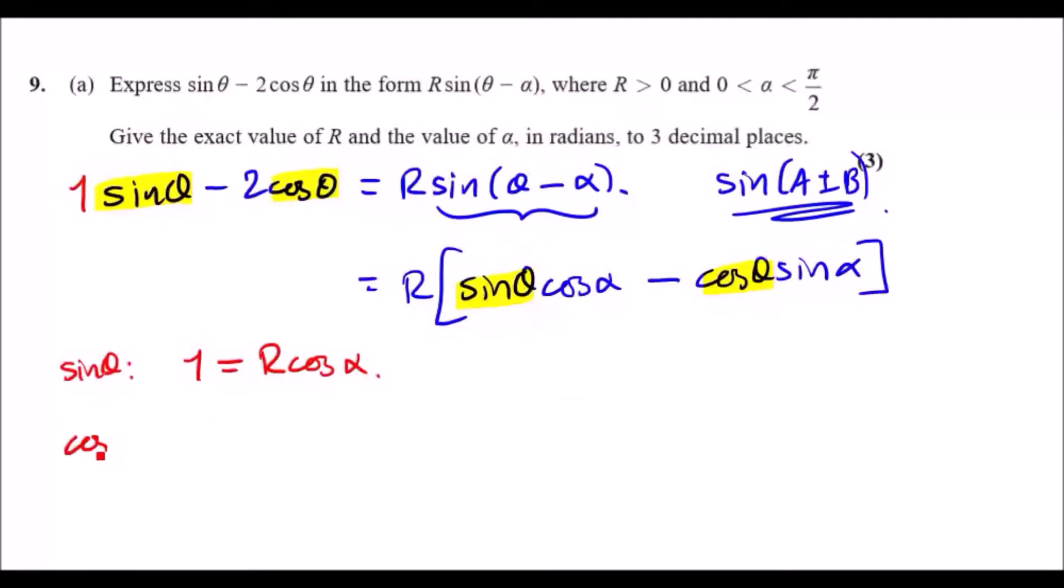Repeat the same for cos θ. We have a coefficient of 2 there, and both are negative so we can ignore negative signs. This is a coefficient of 2 and this is a coefficient of R sin α, so 2 equals R sin α.